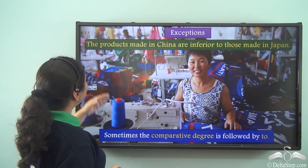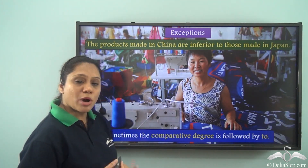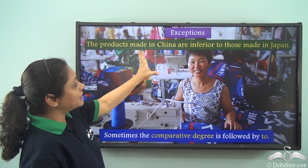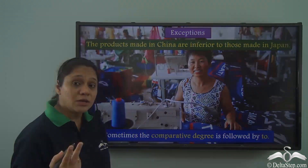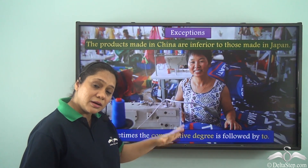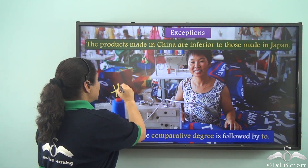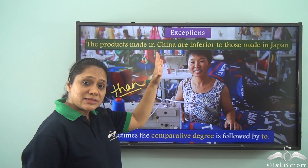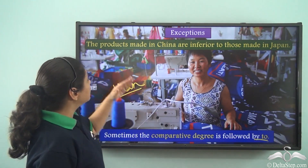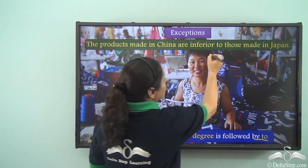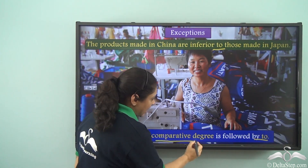Let us read this sentence: 'The products made in China are inferior to those made in Japan.' Here we are comparing two things — the products made in China with the products made in Japan — so we are showing the comparative degree. However, instead of using 'than,' we have used 'to.' So at times when comparing two things, we can use 'to' as well.